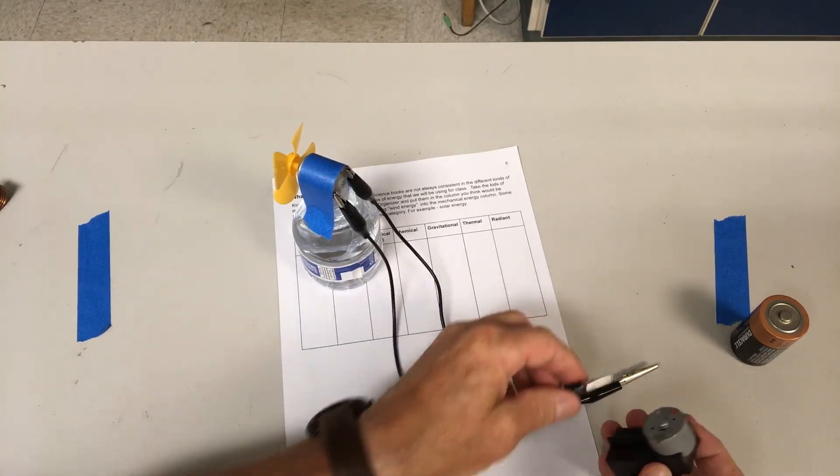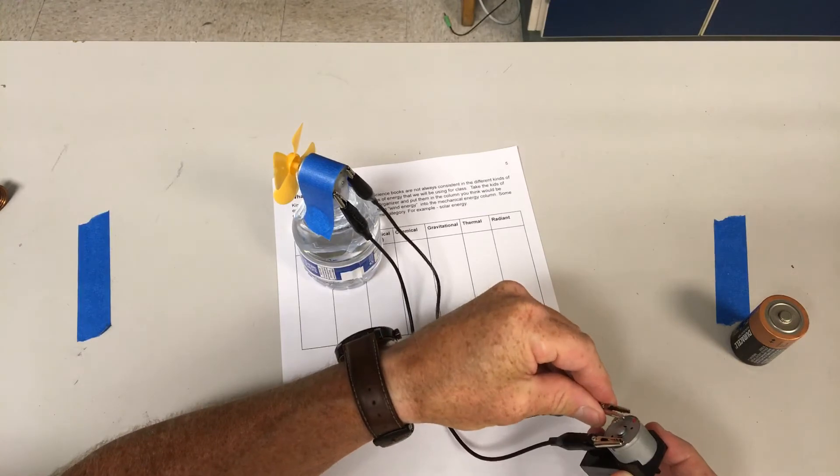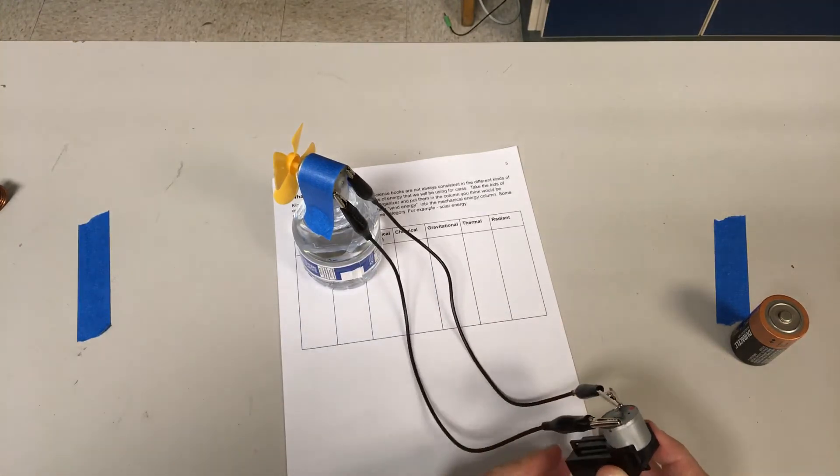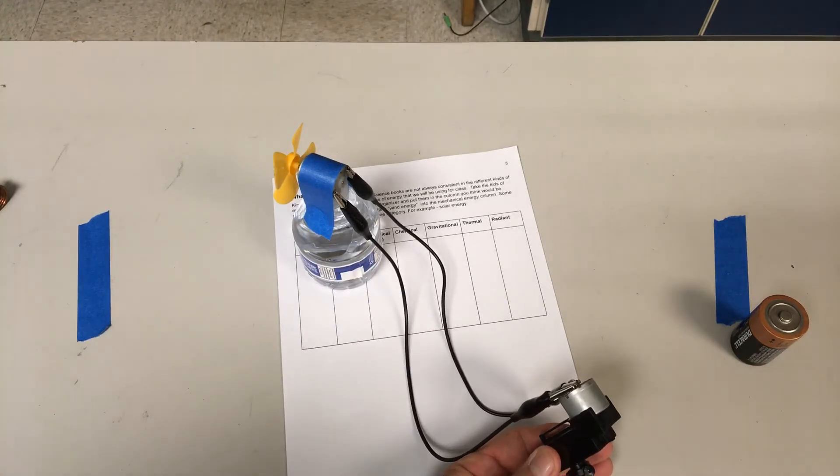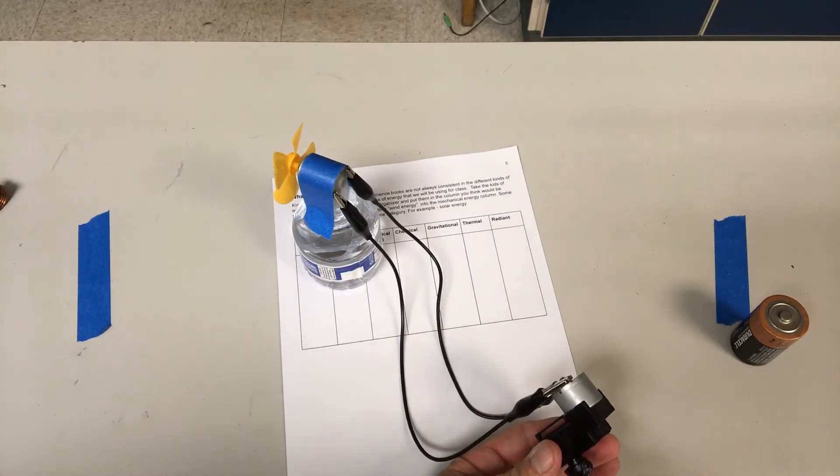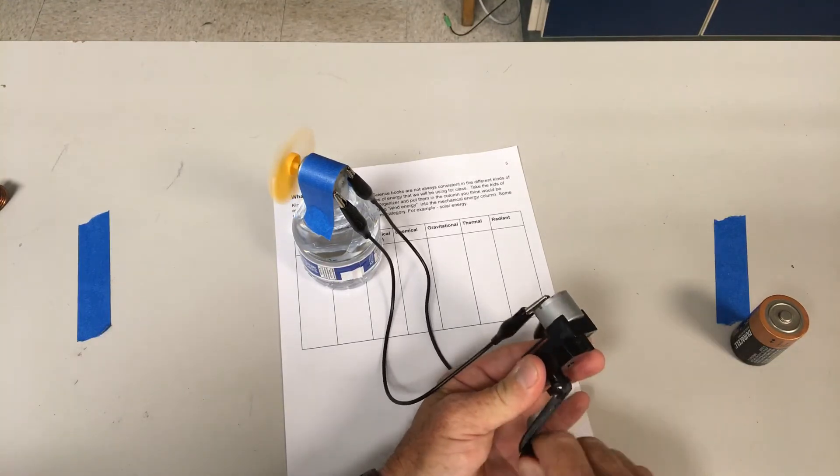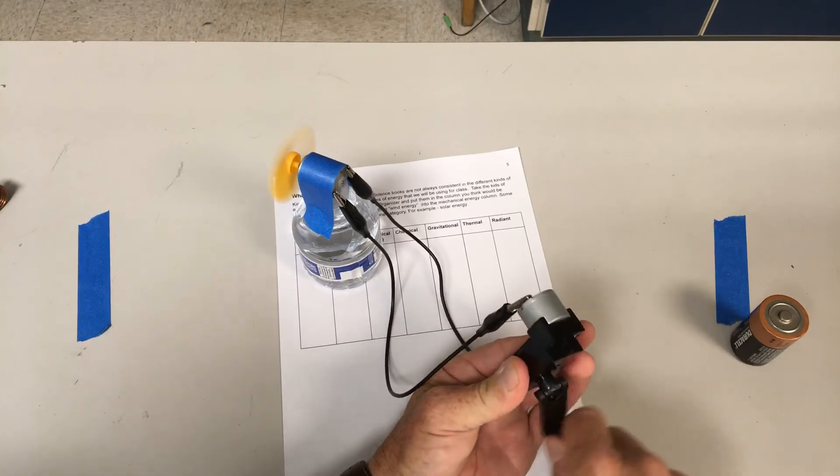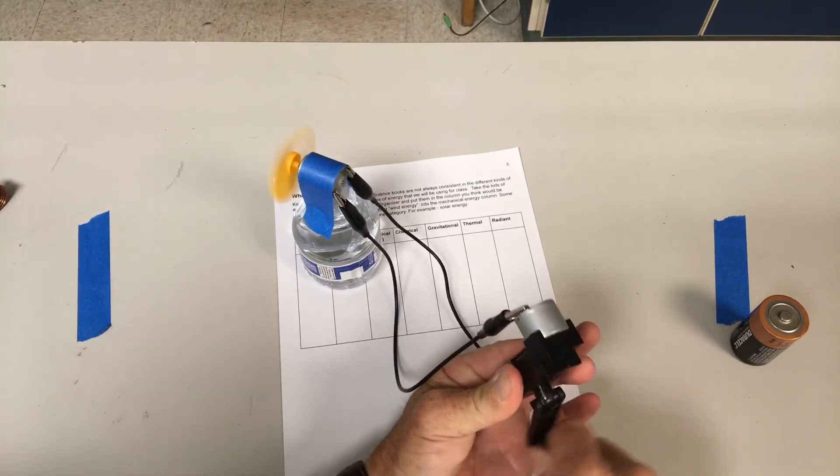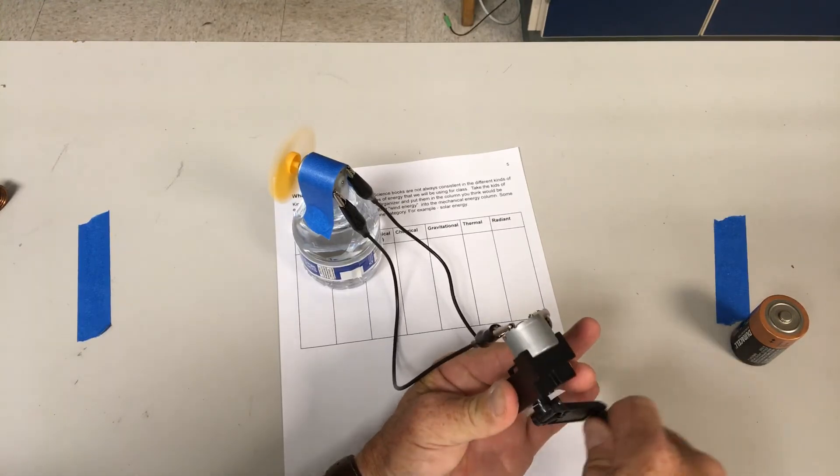Now when I hook these two up like this, nothing happens because there's no electricity being transformed until this starts moving. And the minute I spin that, now we've got electrical current and that fan starts and it moves. It will move as long as I spin this.